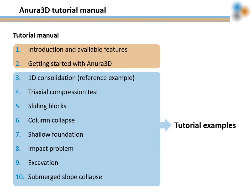The Anura3D tutorial manual is the reference document for Anura3D users. The document is divided into different sections. First, there is an introduction where you can find the available features, either tested or under development, and a list of limitations and warnings. The second chapter explains how to perform a calculation in Anura3D, including instructions to compile the source files and the recommended software for pre- and post-processing the Anura3D files. Finally, chapters 3 to 10 are a collection of practical examples. Different features are presented using different applications and step-by-step instructions are provided for easy familiarization with the software. Users can decide what examples they want to solve depending on their interests. For beginners, it is highly recommended to start from the 1D consolidation example.